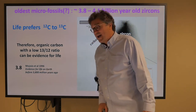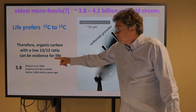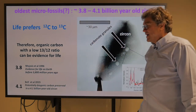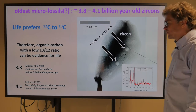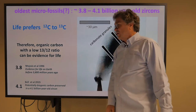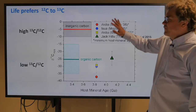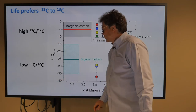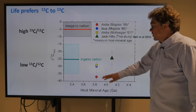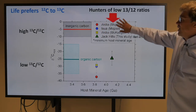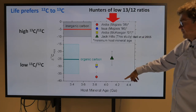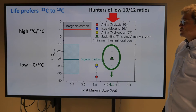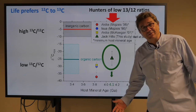Organic carbon with a low 13-to-12 ratio can be evidence for life — it's not the strongest evidence, but it's the best we have going back this far. In 1996, Moegis et al. reported light carbon at 3.8 billion years ago as evidence for life. Then Bell et al. in 2015 pushed it to 4.1 billion years. This is a hot topic: trying to find the lightest carbon at the earliest date. The Jack Hills study by Bell et al. 2015 comes down to 4.1 billion years, which may be our best evidence for the earliest life.